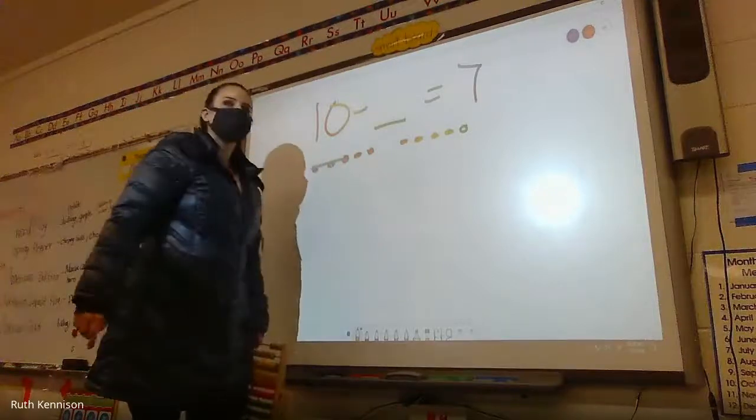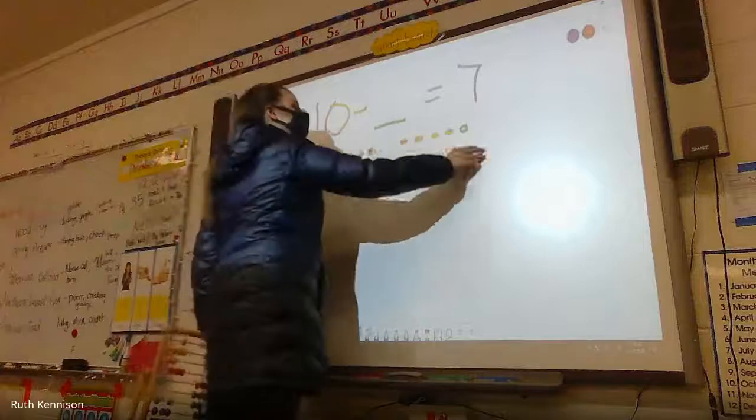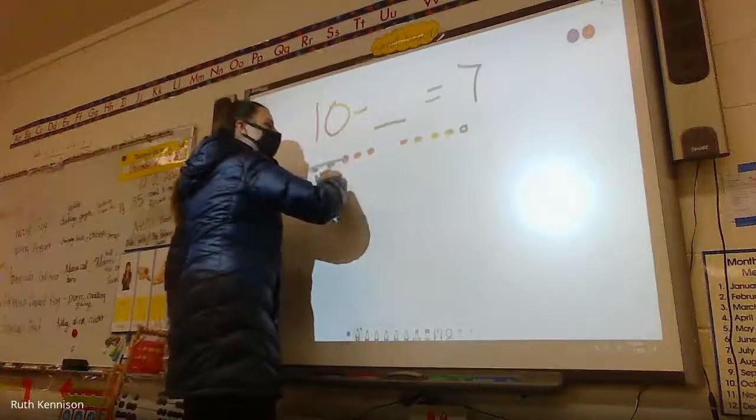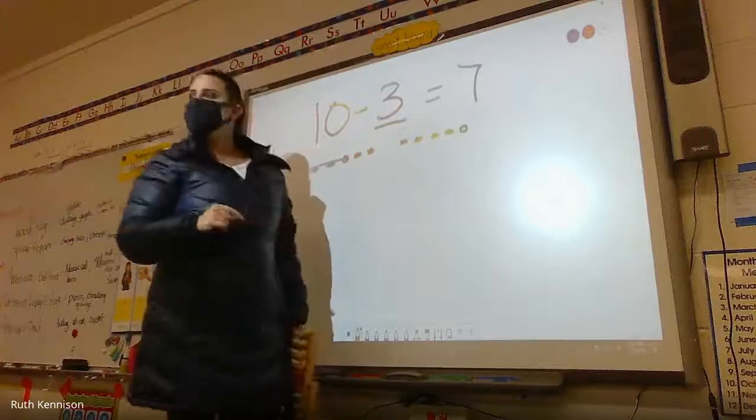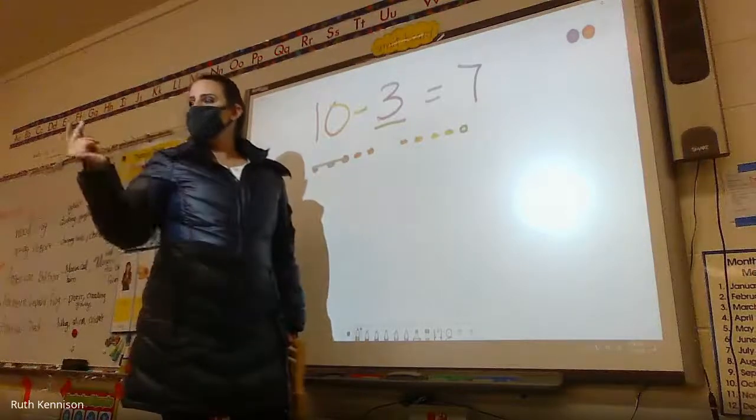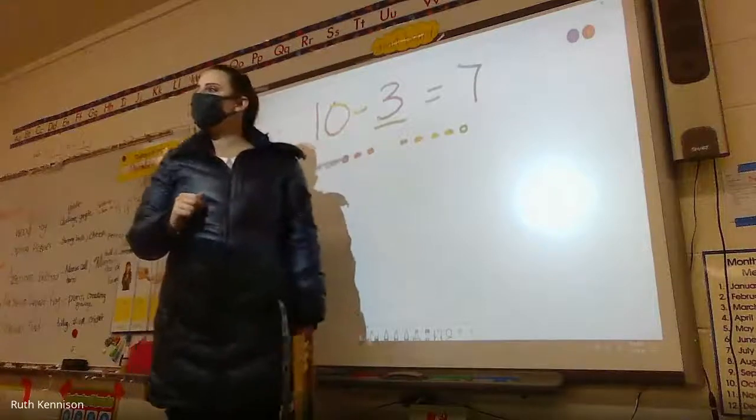How many did we take away, max? That's what I asked. We have seven. Right. We started with ten. We have seven. We kept seven. We took away three. That's how you fill in that missing number over here. When you're doing a missing subtraction.